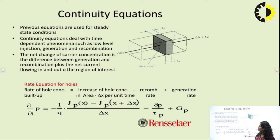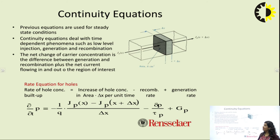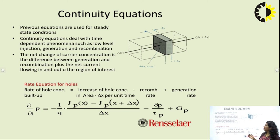The rate equations will give an idea about the net change of carrier concentration — how carrier concentration is used in the form of recombination rate and generation rate. The rate of hole concentration build-up is equivalent to increase of hole concentration in area multiplied by Δx per unit time, minus recombination rate, plus generation rate. We will see more details of the continuity equation in later lectures. We have seen Poisson's equation, carrier recombination, and generation.